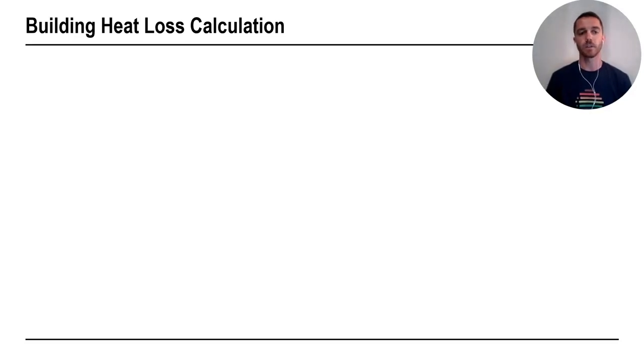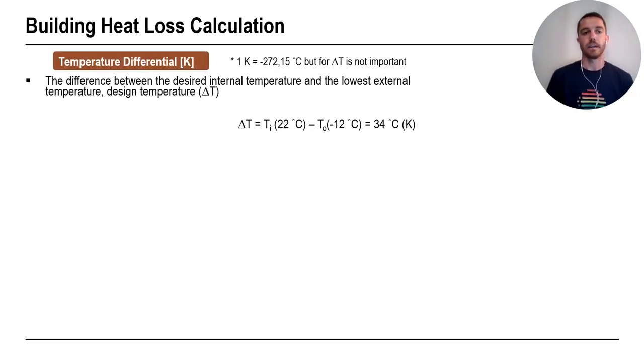Regarding building heat loss calculation, there are a few important parts to take care of. First one is temperature differential. This is the difference between desired internal temperature in our building, in our room, and the lowest external temperature, usually known as design temperature.